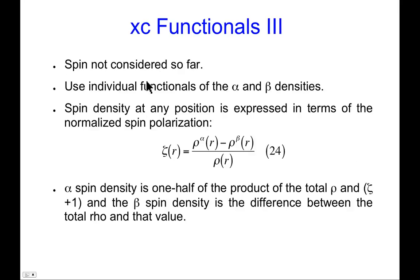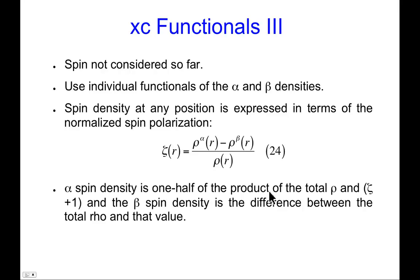Up till now we haven't considered spin. If you do want to deal with spin, you can have separate functionals for the alpha and beta densities. Notationally, the field refers to the normalized spin polarization zeta, defined as the difference between alpha and beta spin densities divided by the net density. The alpha spin density is one-half the product of the total density and (zeta plus 1), and the beta spin density follows similarly by the difference.